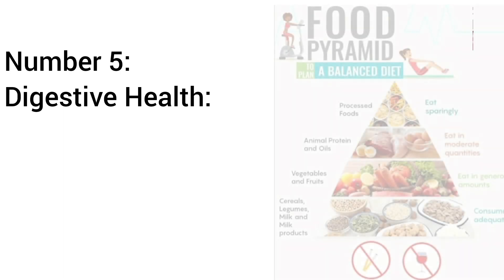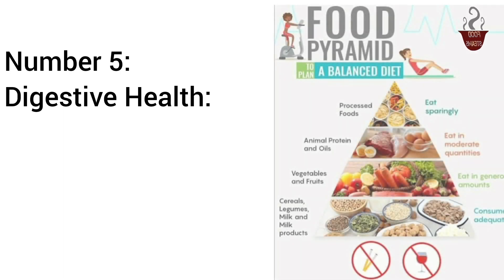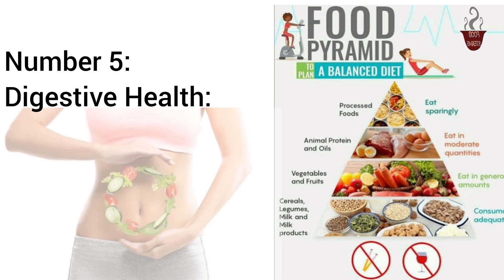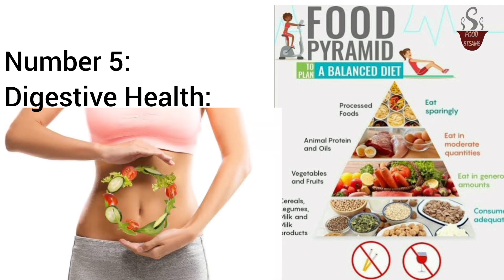Number 5: Digestive Health. The inclusion of fiber-rich foods like fruits, vegetables, and whole grains in the food pyramid promotes healthy digestion and helps prevent constipation.